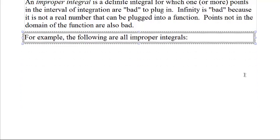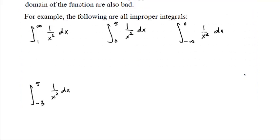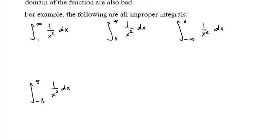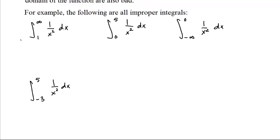Points not in the domain of the function are also bad. For example, the following are all improper integrals. Four examples of improper integrals. What's wrong over here? What's wrong over here is infinity isn't a real number. You can't take negative 1 over x and then plug in infinity and plug in 1 and subtract because you can't plug in infinity. Infinity is not a number.